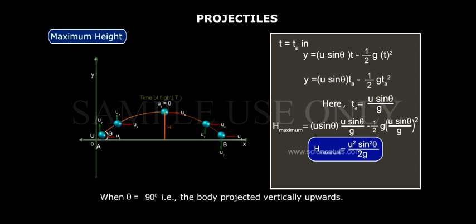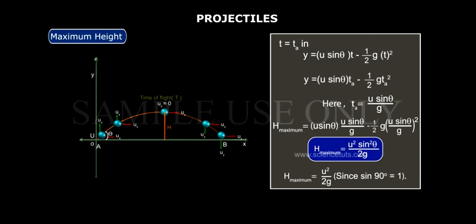When θ = 90°, that is when the body is projected vertically upwards, h_max = u² / 2g, since sin 90° = 1. This is equal to the maximum height reached by a body projected vertically upwards.